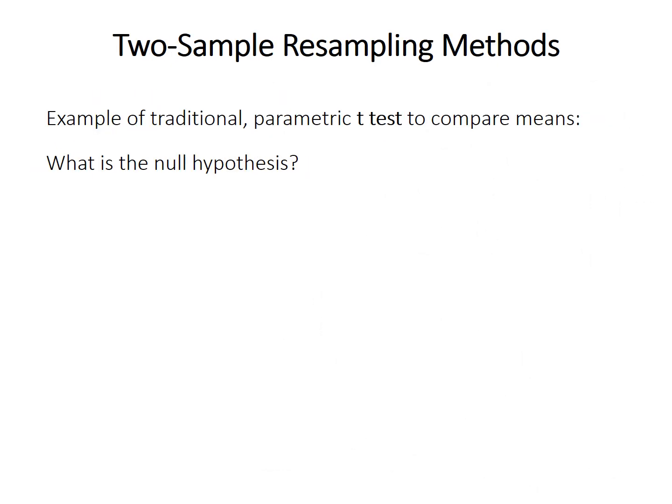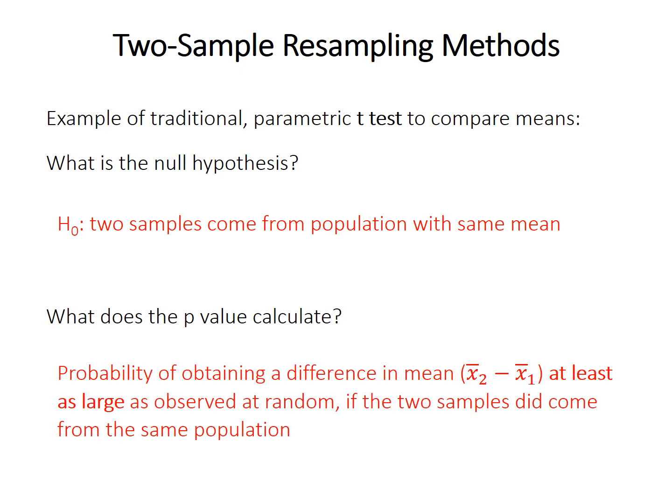So to consider how resampling methods can be used for two-sample comparisons, testing for a significant difference between the two, for example, let's recap the traditional parametric method. So take the example of the t-test. The null hypothesis is that the two samples come from a population with the same mean. And we get the p-value, which is an estimate of how likely there is to be a difference, and that's the probability of obtaining a difference between means at least as large as observed if the two samples did come from the same population.